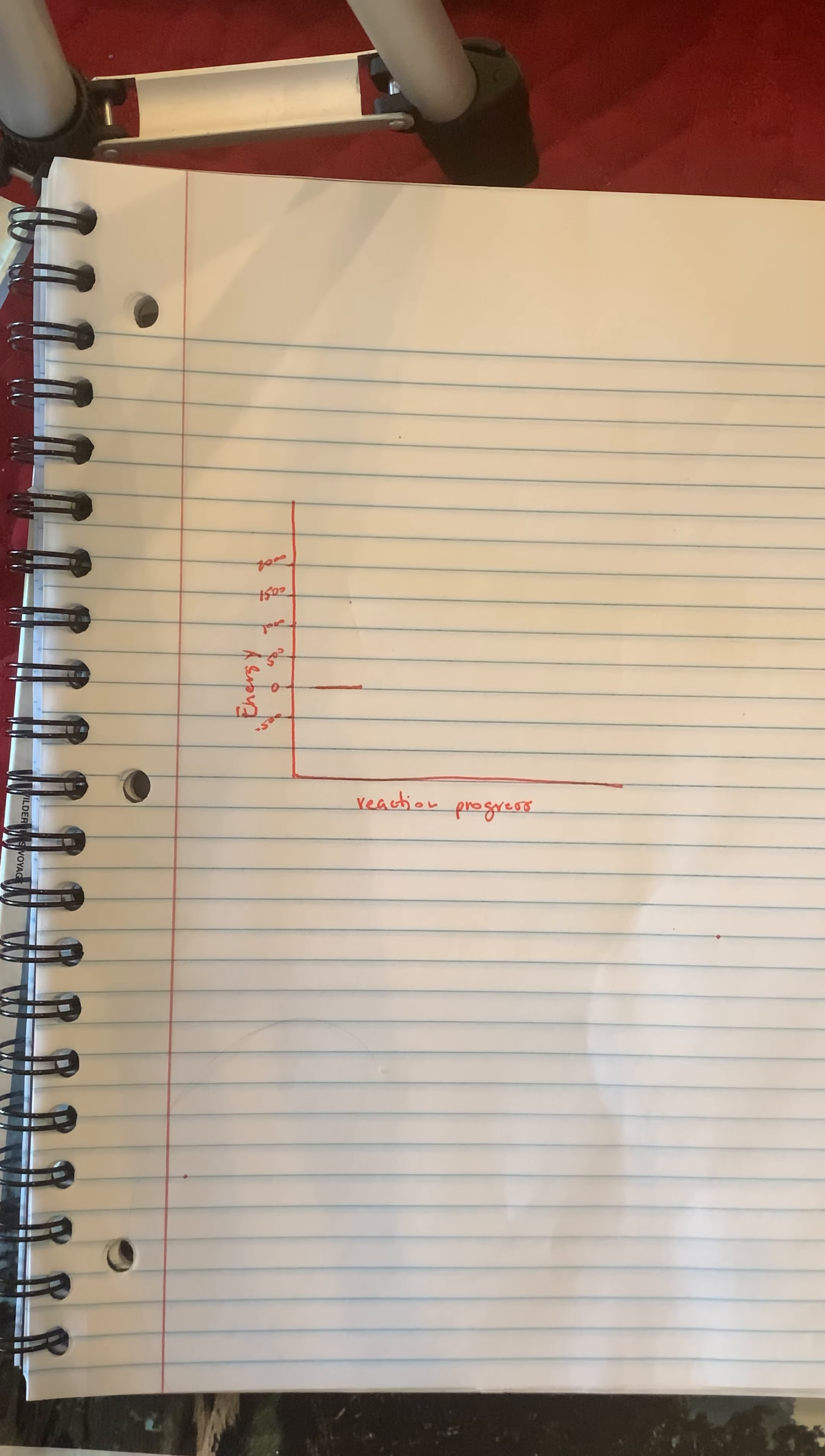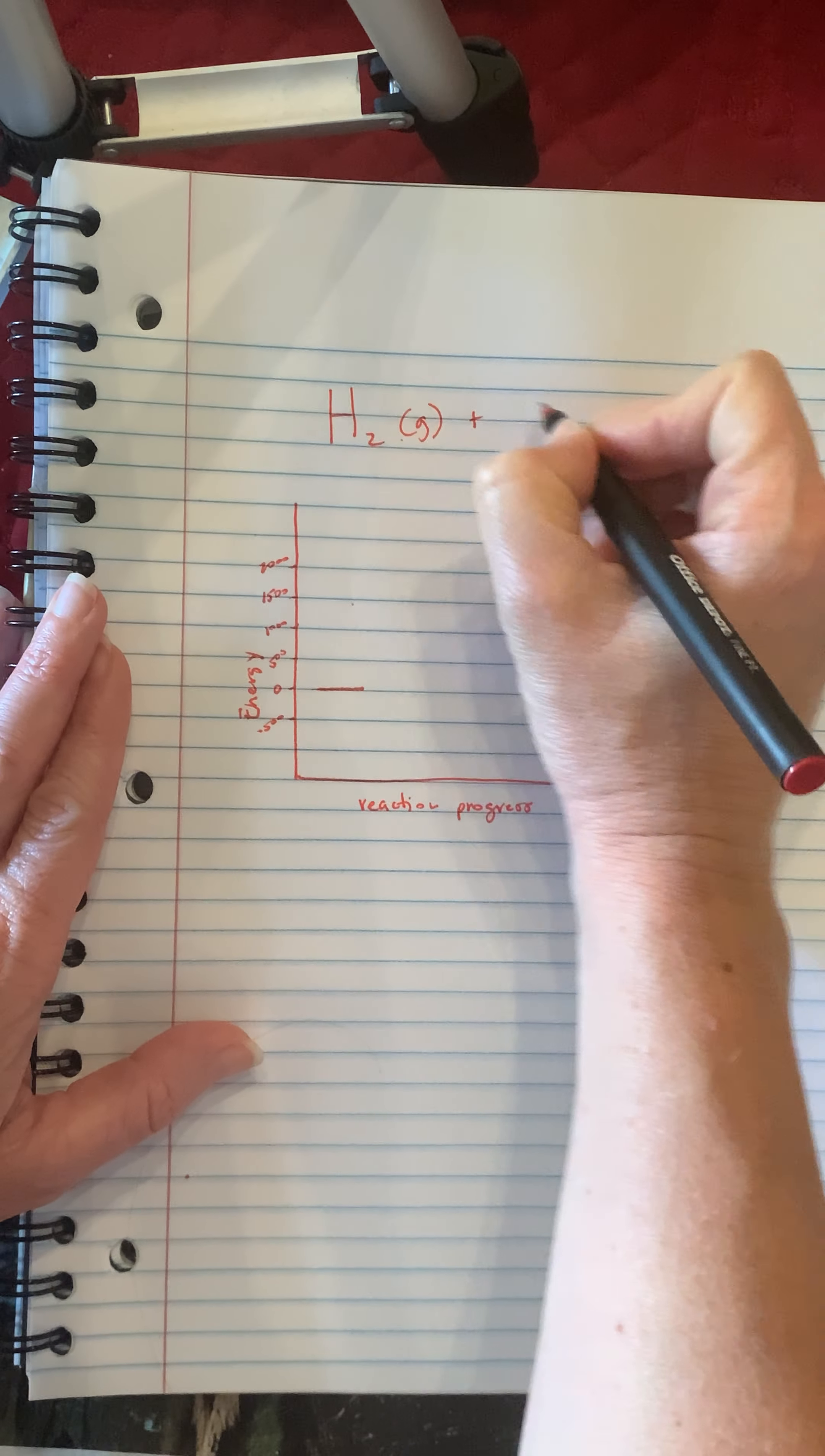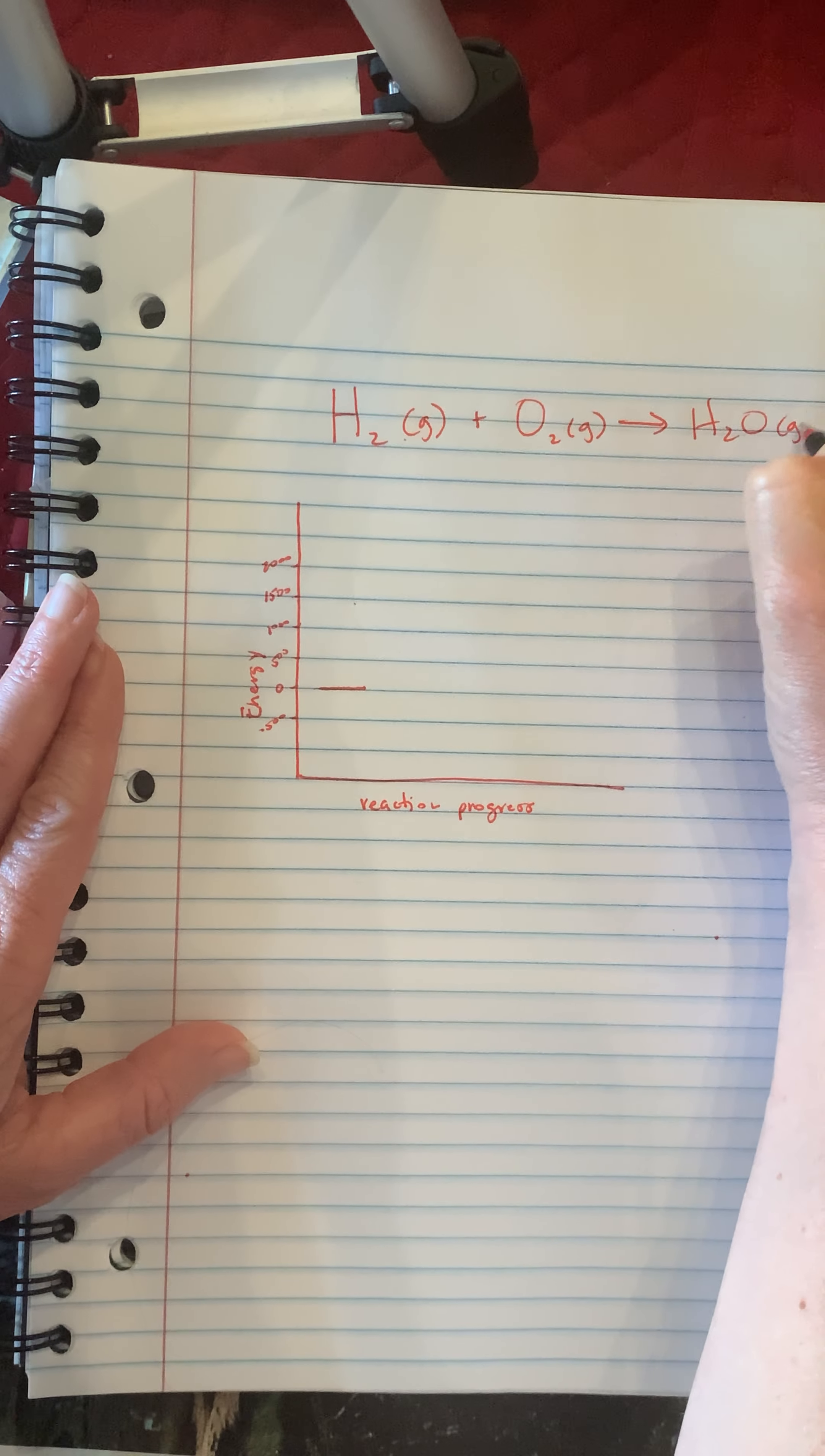Good afternoon. I just wanted to go over the parts of an energy diagram with an example of hydrogen, H2 gas, reacting with oxygen, O2 gas, to form H2O in its gaseous state.